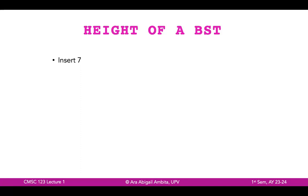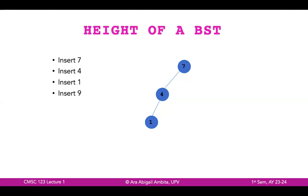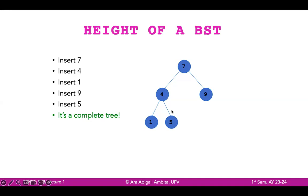What happens if the tree is not complete or full? Let's say we first insert 7, then insert 4 — four goes to the left of seven. Then we insert 1, which goes to the left of four. Then insert 9, which goes to the right of seven. Then insert 5 — five is less than seven but greater than four, so it goes to the right of four. This is a complete tree as you can see.